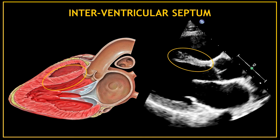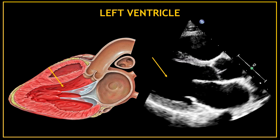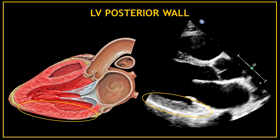This bright thicker line in the middle is the anterior interventricular septum. This bigger black space under the septum corresponds to a chamber — this chamber is the left ventricle. This thick area is the left ventricular posterior wall.